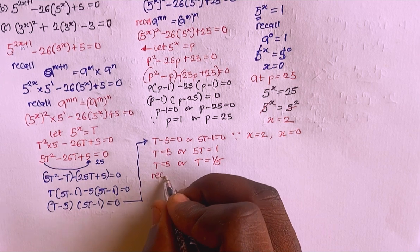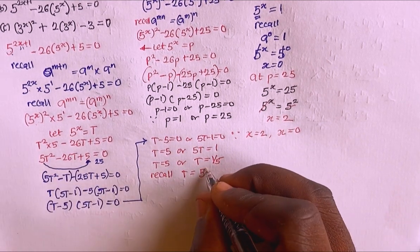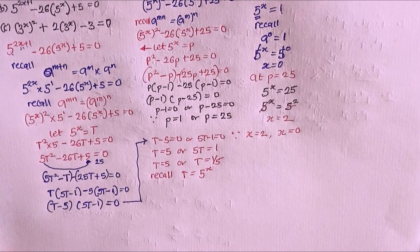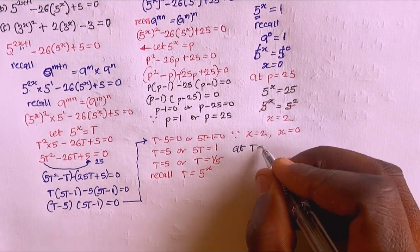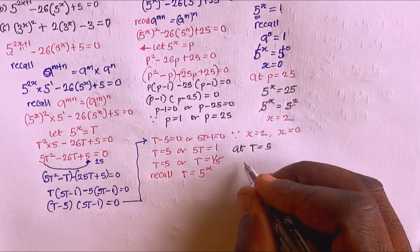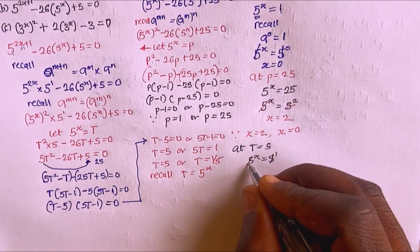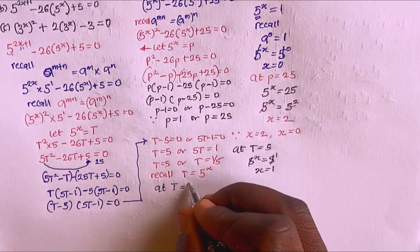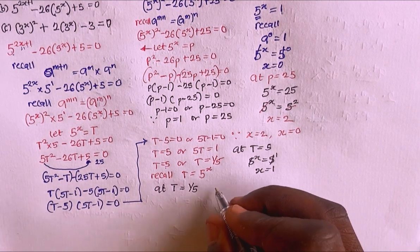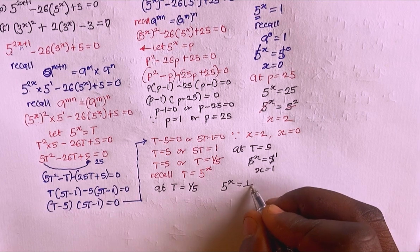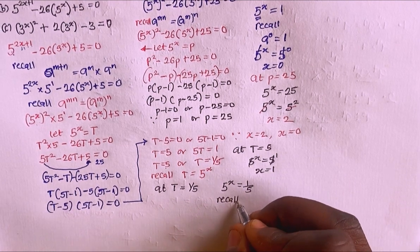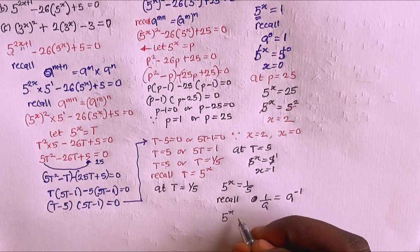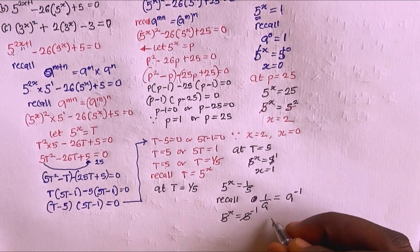Recalling T equals 5^x: at T equals 5, I have 5^x equals 5^1, so x equals 1. At T equals 1/5, I have 5^x equals 1/5. Recalling that 1/a equals a^(−1), this becomes 5^x equals 5^(−1), so x equals −1.